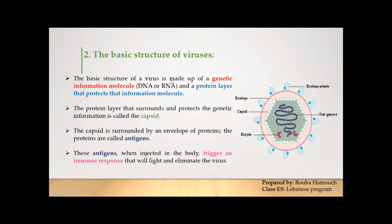Now we look at the basic structure of viruses. A virus is made up of a genetic information molecule that can be either DNA or RNA. As you can see in this figure, inside the virus we have the viral genome or genetic material. The genetic information is surrounded by a protein layer called the capsid, whose role is to protect the genome. The capsid is then surrounded by an envelope made up of proteins.